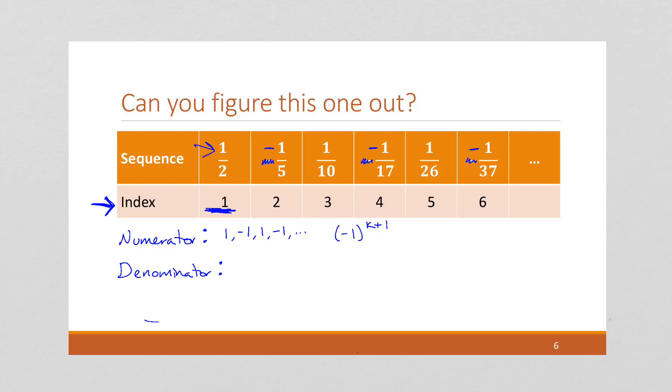And then the denominator, this is also a little tricky, but if you look at the index, 2 squared, 2 squared, if we're looking at this index 2, 2 squared is 4, and our denominator is 5. 3 squared is 9, our denominator is 10. 4 squared is 16, our denominator is 1 more than that. 5 squared is 25, our denominator is 1 more than that. This is going to be k squared plus 1. Whatever our index is, squared, add 1 to it. So if we put these together, we're going to get that our explicit formula for this sequence is negative 1 to the k plus 1 over k squared plus 1 for all k greater than or equal to 1, because that's given to us.